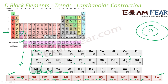Only from hafnium is the impact visible, because these elements actually decrease the size. This is called lanthanide contraction, and this is because of the poor shielding effect of 4F electrons.